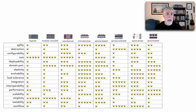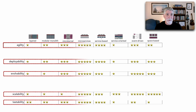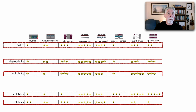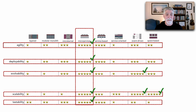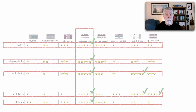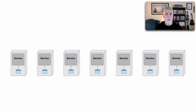Looking at our particular problem, the architecture characteristics that are important to us are things like agility, deployability, evolvability, scalability, and testability. We look for five stars and we see quite a few of them here, but we do see a grouping — it turns out microservices makes a pretty good candidate. So we choose to implement that particular business problem in microservices.